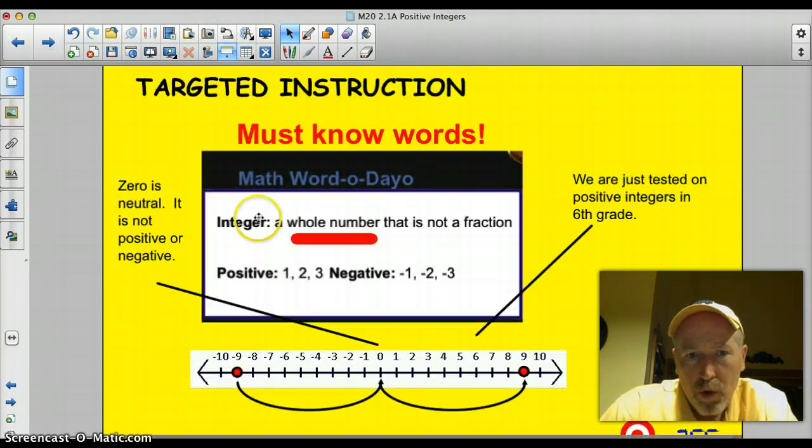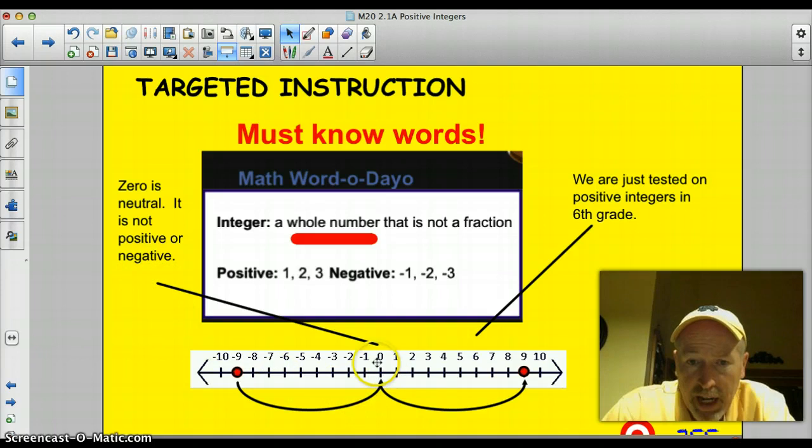That's part of the must-know words. An integer is a whole number that's not a fraction. I repeat, not a fraction. In sixth grade in Minnesota, we're just focused on the positive integers, which are everything greater than zero. Remember, zero is a neutral number. It's not positive or negative, and I made a note of that over here. And then, everything beyond or lower than zero, that's a negative number.